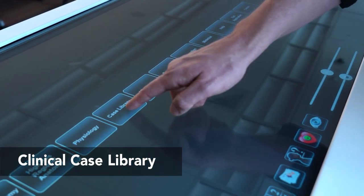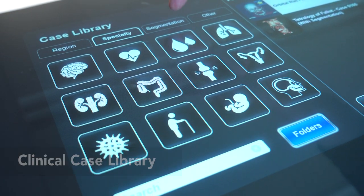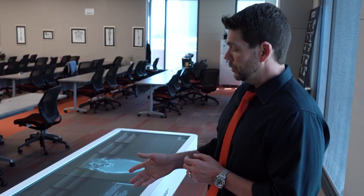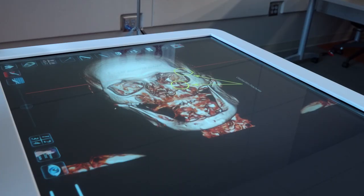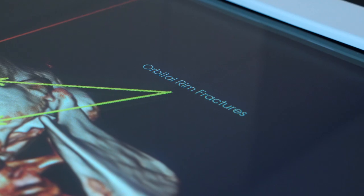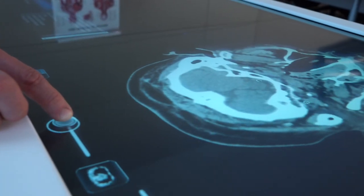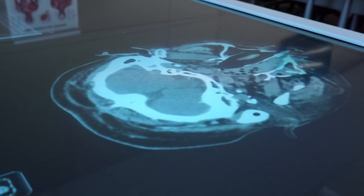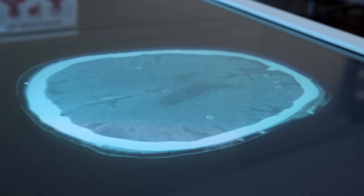In the clinical case library tab there are pre-built cases with both imaging and descriptions of the case. What's pulled up and what's nice here is we have the high definition imaging so we can actually see the osteology here highlighting the orbital rim fractures and then on this side here we have CT imaging where we can scroll through these different slices. It gives students the ability to put the imaging into what we've always talked about what the patient will present.